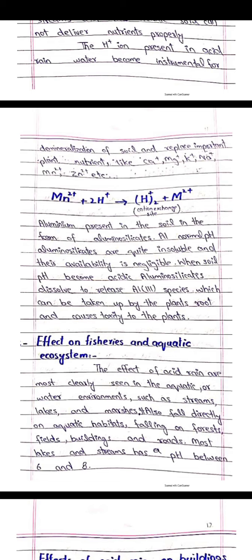When soil pH becomes acidic, aluminium silicate dissolves to release Al³⁺ species, which can be taken up by plant roots and cause toxicity to the plant.